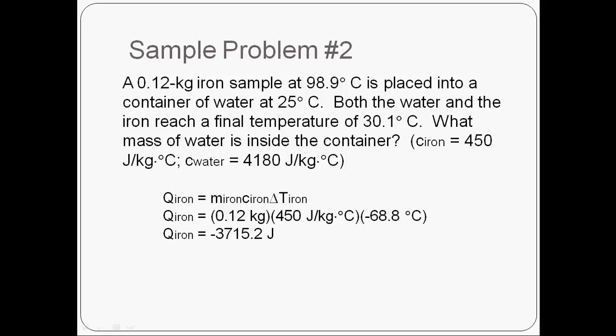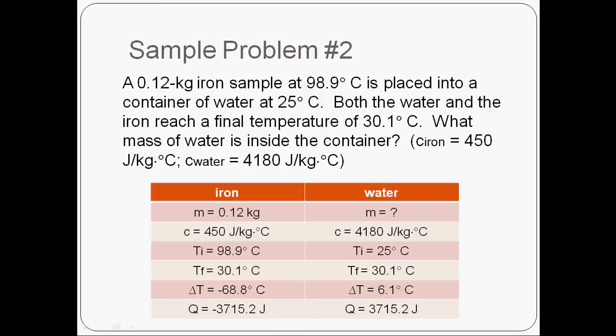Now here's how this is helpful in solving for the mass of the water. When the iron lost that heat, it was giving that heat to the water. Those were the two objects in thermal contact with each other. So what I know then is that whatever amount of energy the water gained has to be the same as the energy the iron lost. So if the iron lost 3,715.2 joules of energy, I know that's the amount of energy my water gained. So I can go back to my table of things that I know and fill all of that in.